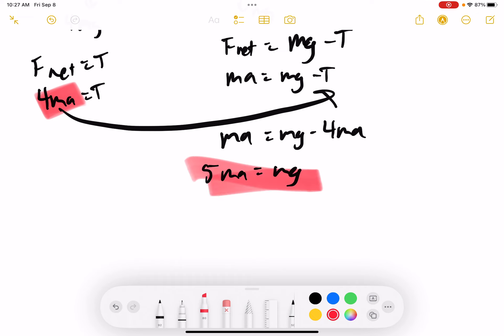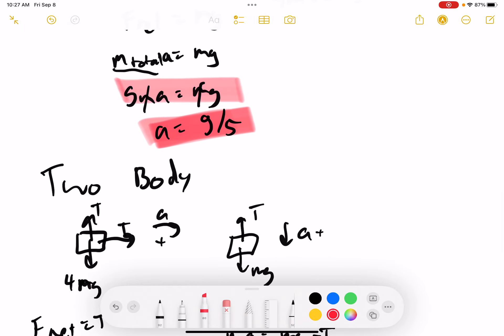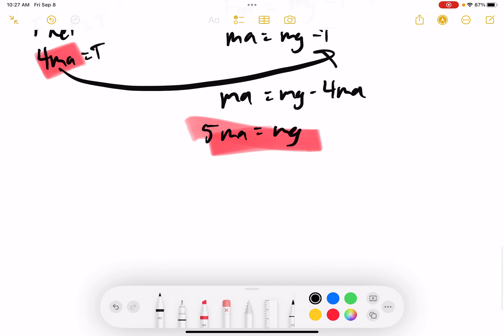You notice that this looks very similar to this. They should get the same answer, so it makes sense that they're the same. So m's cancel, and I'm left with a equals g divided by 5.